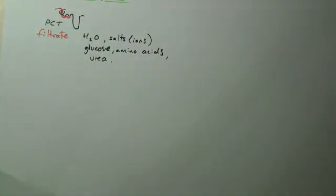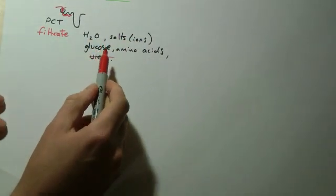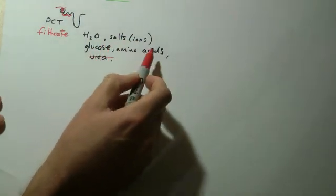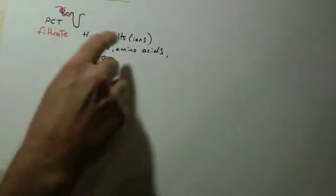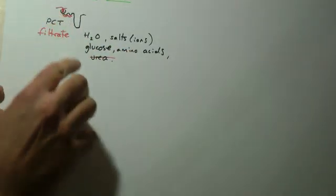Now, urea is the one that we want rid of, we're not interested in that. All of these other things, certainly the glucose, certainly the amino acids, some of the salts and some of the water, we want to keep that, we want to get that back into the bloodstream.